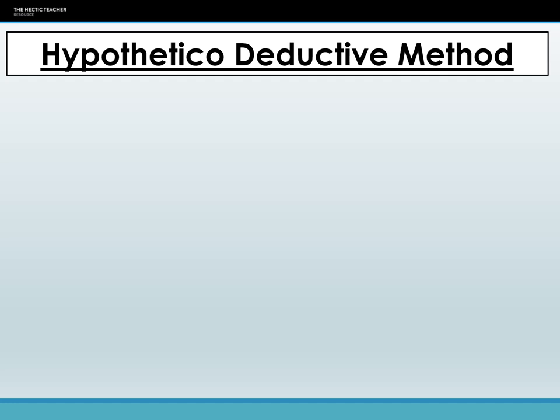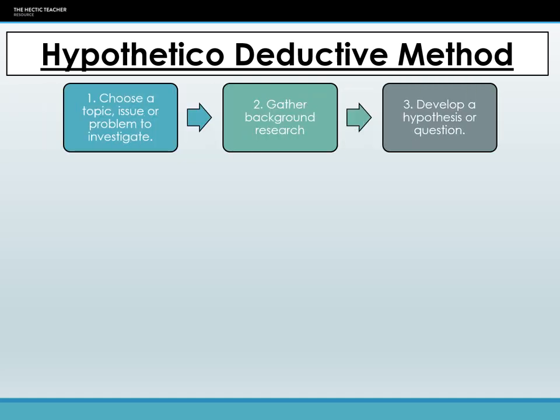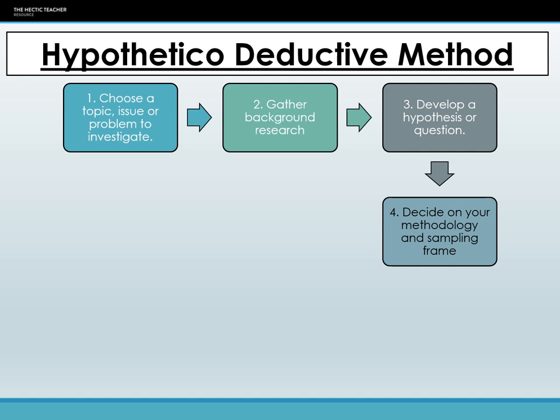There are nine steps to the hypothetical deductive model. The first is to choose a topic, issue or problem to investigate. Once that's been done, the second step is gathering background research. Third is the development of a hypothesis or question — positivists prefer a hypothesis, whereas interpretivists prefer a research question. Then deciding on methodology and sampling frame, which will be covered in separate videos.